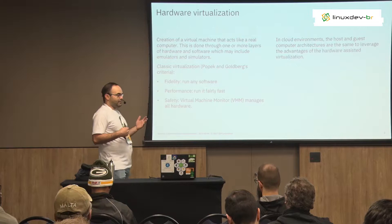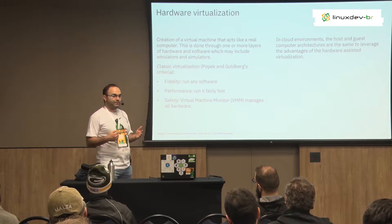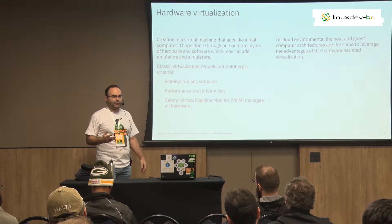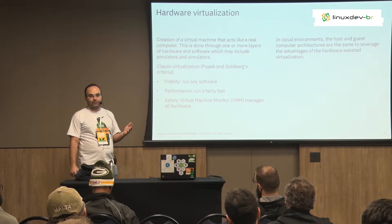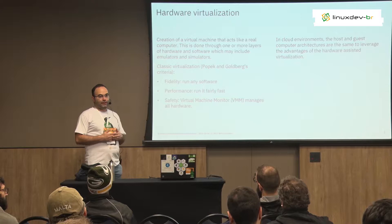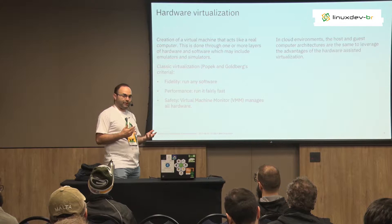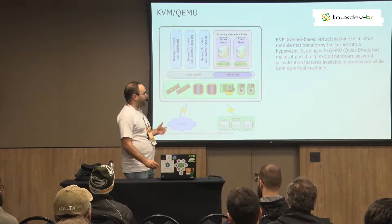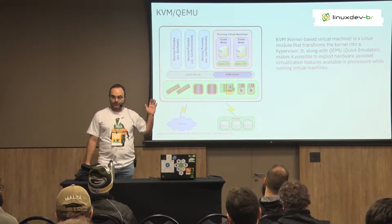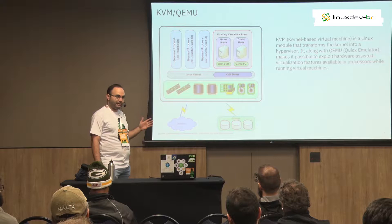If you are trying to run an IBM Power processor on x86, you have to emulate the instructions and the processor. But when you want performance — when you are in a cloud environment — you probably want speed. In that case, we will virtualize the same hardware we have in the host, leveraging hardware characteristics to improve performance. This presentation specifically covers KVM and QEMU, which is the de facto standard in the industry today for this kind of virtualization.